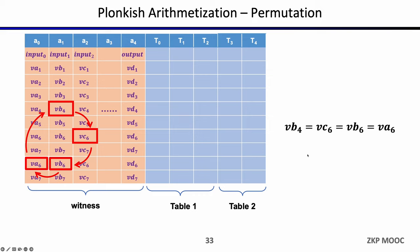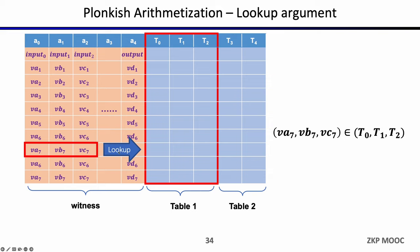The second constraint you can define in Plonkish organization is called permutation. It defines equality among different cells, and it can be used to link different gates together. For example, vb4 equals vc6 equals some other cell. If you define some custom gate here and want to link different gates together, you can use one permutation to prove that the output of this gate is equivalent to the input of another gate. The last constraint you can define is called lookups — you can define a tuple and prove that this tuple belongs to a table. For example, the tuple (v7, vb7, vc7) belongs to some table.